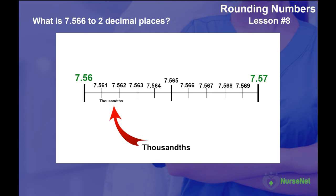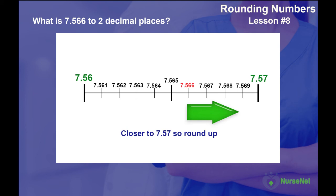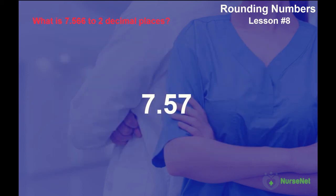So we've got 7.561, 7.562, 7.563, 7.564, and so on until we get to 7.57. So if we look at our number, 7.566, we can see that it's closer to 7.57 than it is to 7.56. Therefore, rounding up to two decimal places, the answer is 7.57.